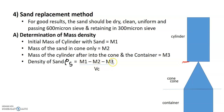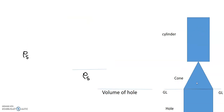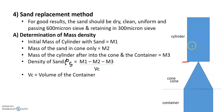M2 is the mass of sand in the cone. M3 is the mass of sand in the container. The density of sand is calculated as M1 minus M2 minus M3, divided by the volume of the container. Since the container volume is known, this gives us the density of sand. This is the calibration — the density of sand is a constant value.